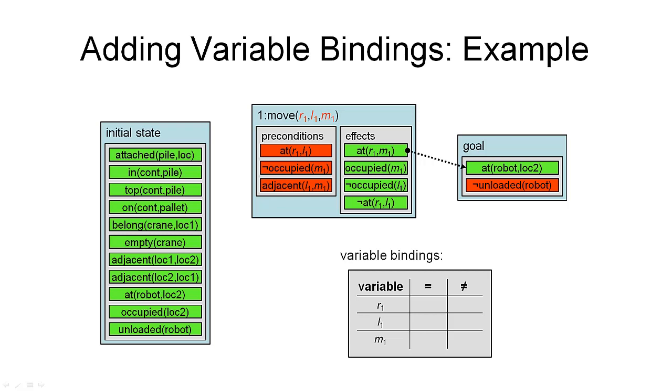And here is our example again. I've dropped the second action simply to save some space. So, you remember we've introduced this causal link here from the effect to the goal condition to record that we have introduced this action to support this goal condition. Now, with this action, of course, we've also introduced a new set of variables, R1, L1, and M1, moving the robot R1 from location L1 to location M1. And initially, our variable bindings were all empty. So, this is the table of variable bindings we maintain. And it contains the three variables we've just introduced, R1, L1, and M1. And there's no constraints on these variables.